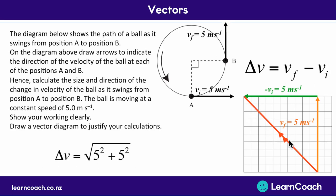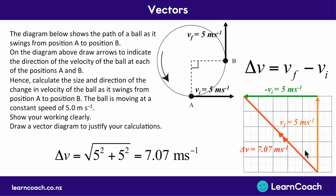We know the direction but not yet the size. Using Pythagoras — the square root of a² + b² — we get 7.07 meters per second for the change in velocity. To get specific about direction, use SOHCAHTOA or trigonometry to work out an angle, which works out to be 45 degrees. So the technical answer is that the change in velocity is 7.07 meters per second at an angle of 45 degrees, and you can draw that angle on the diagram so they know which angle you mean. That's how you use vectors to answer a question.